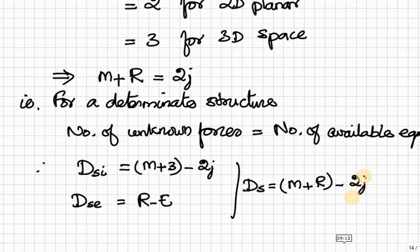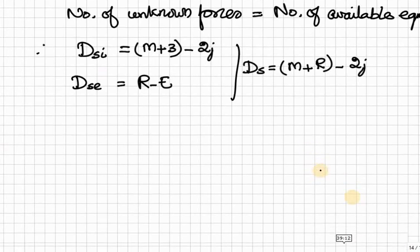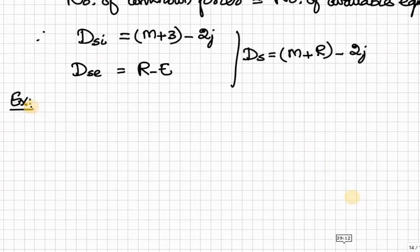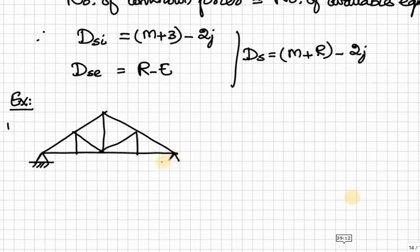Now, we will look at problems. So, in this truss, this is a simply supported truss. Therefore, here number of members M is equal to 13. Counting: 1, 2, 3, 4, 5, 6, 7, 8, 9, 10, 11, 12, 13.